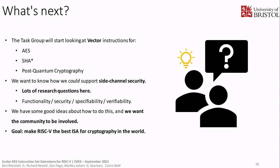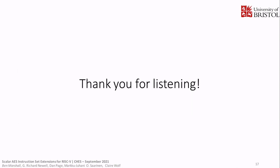We've got some ideas but we want to talk to you because you're the experts. Overall, our goal is to make RISC-V the best ISA for cryptography in the world. We've already used a lot of work that's appeared at CHES in getting closer to that goal, but we know there's a way to go. Thank you for listening — I hope you've learned a little bit about the AES instructions we've designed and where they're going to go and how they'll be used.